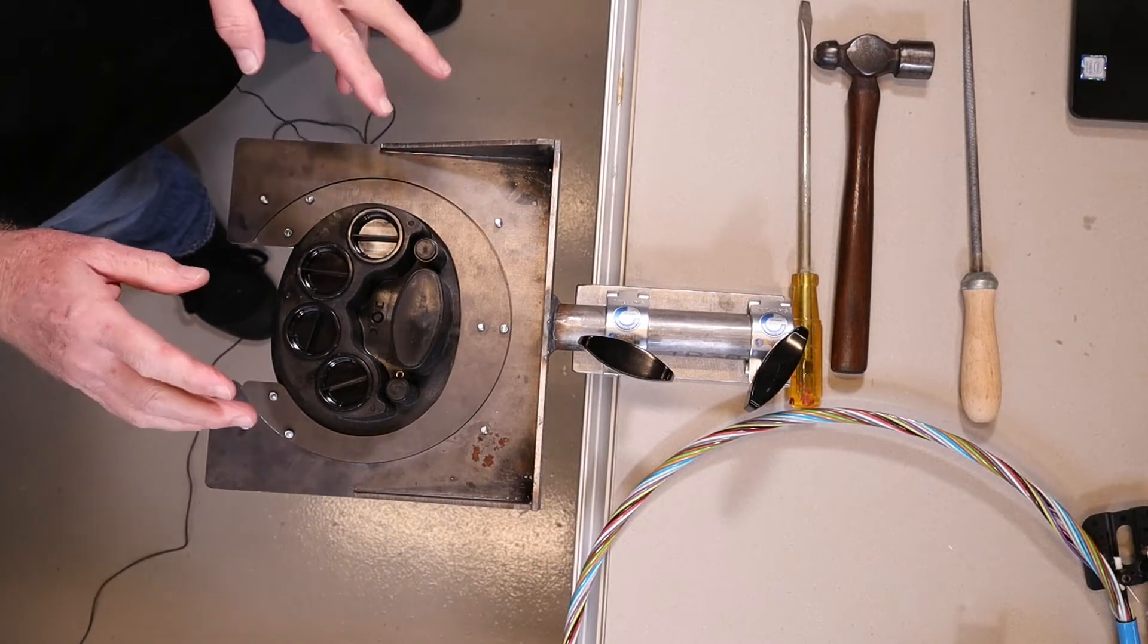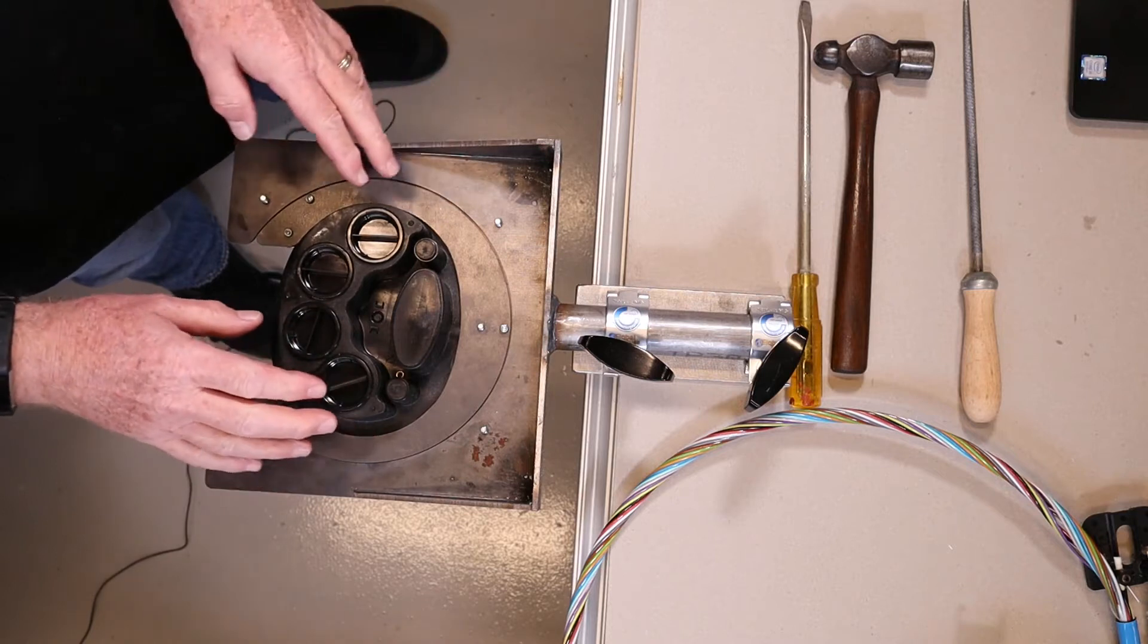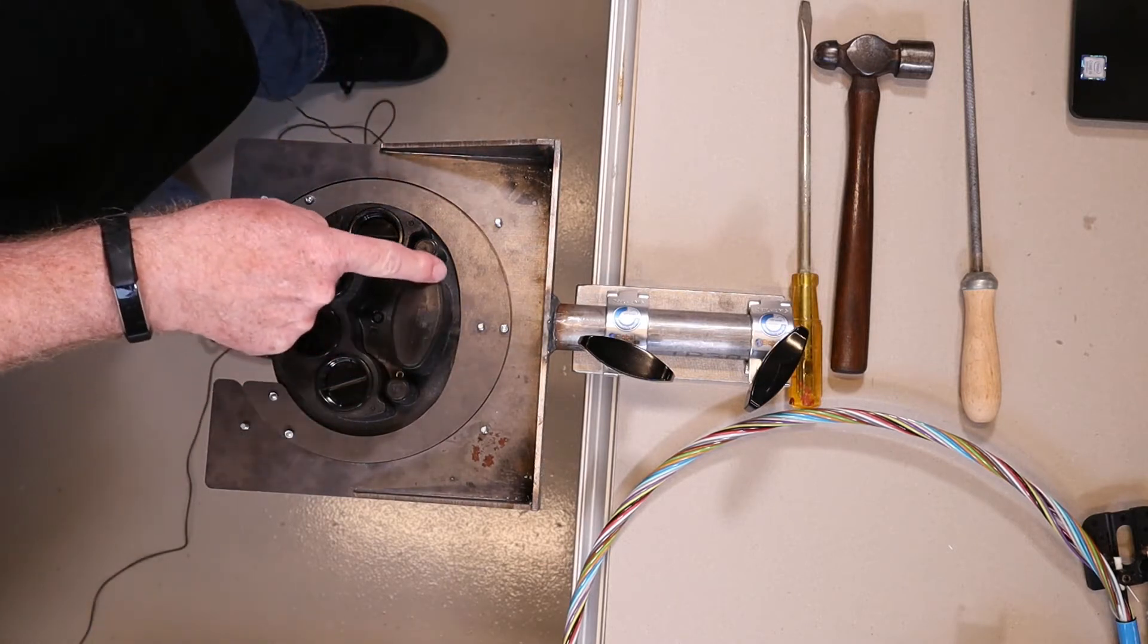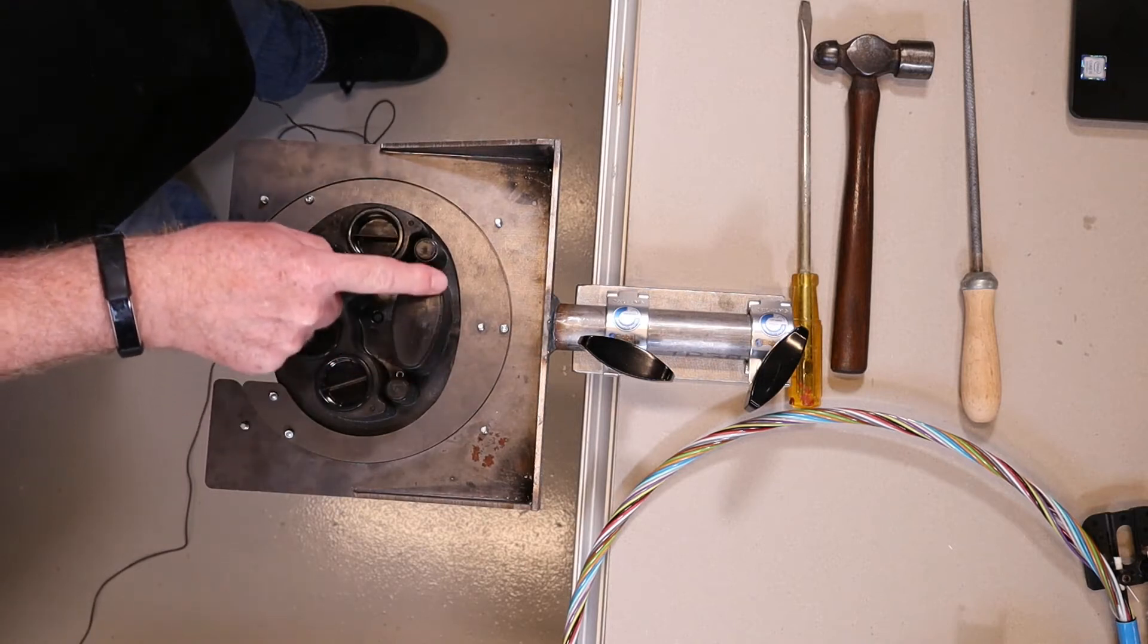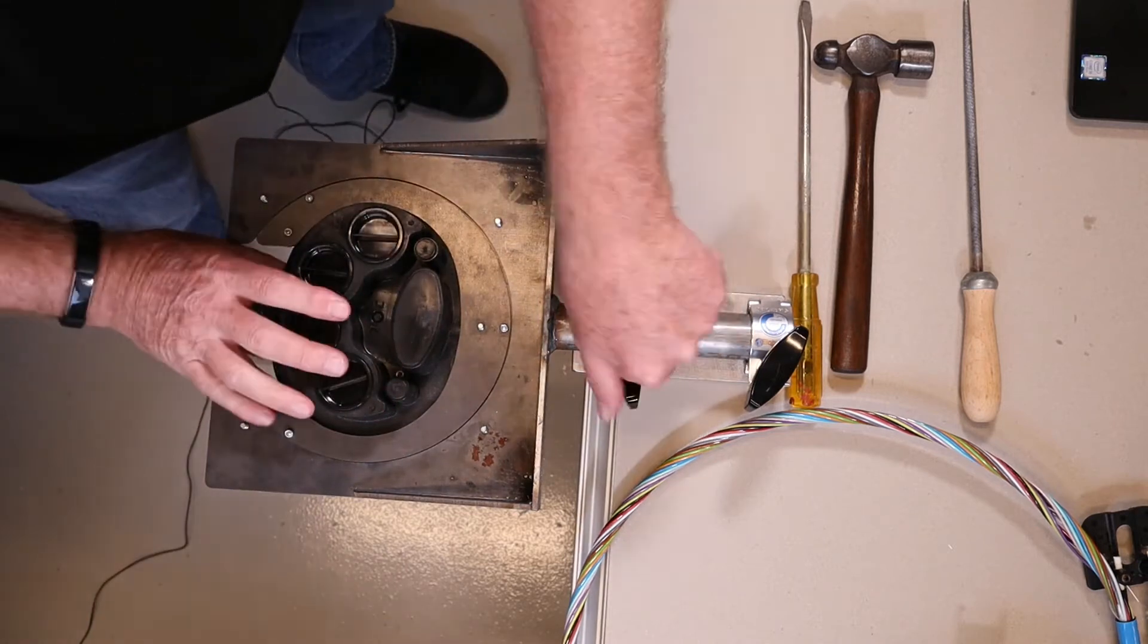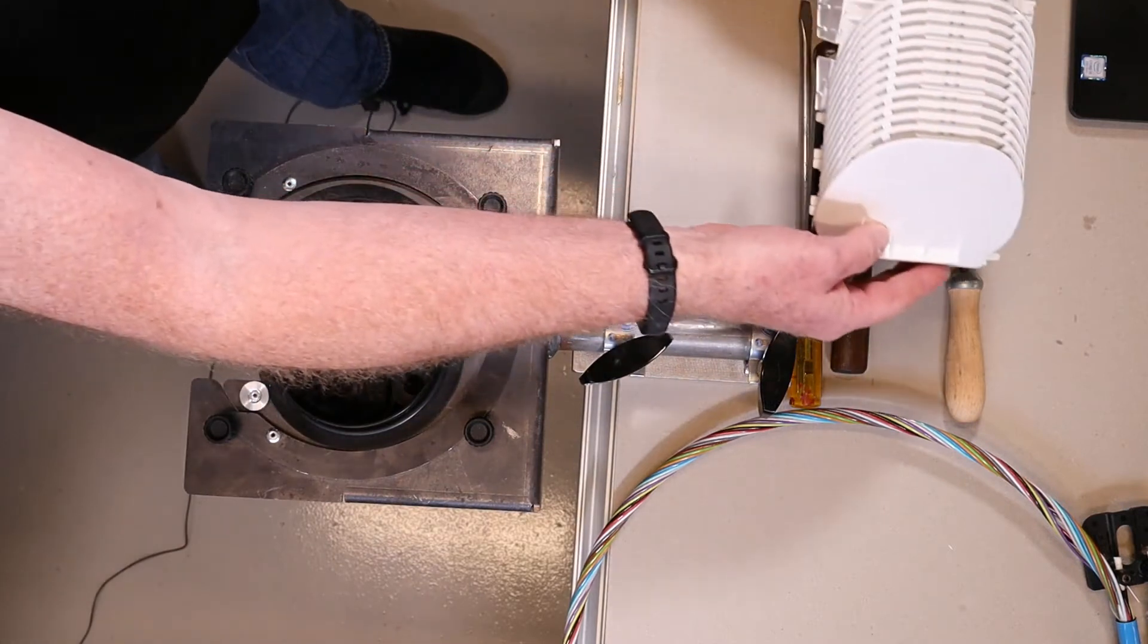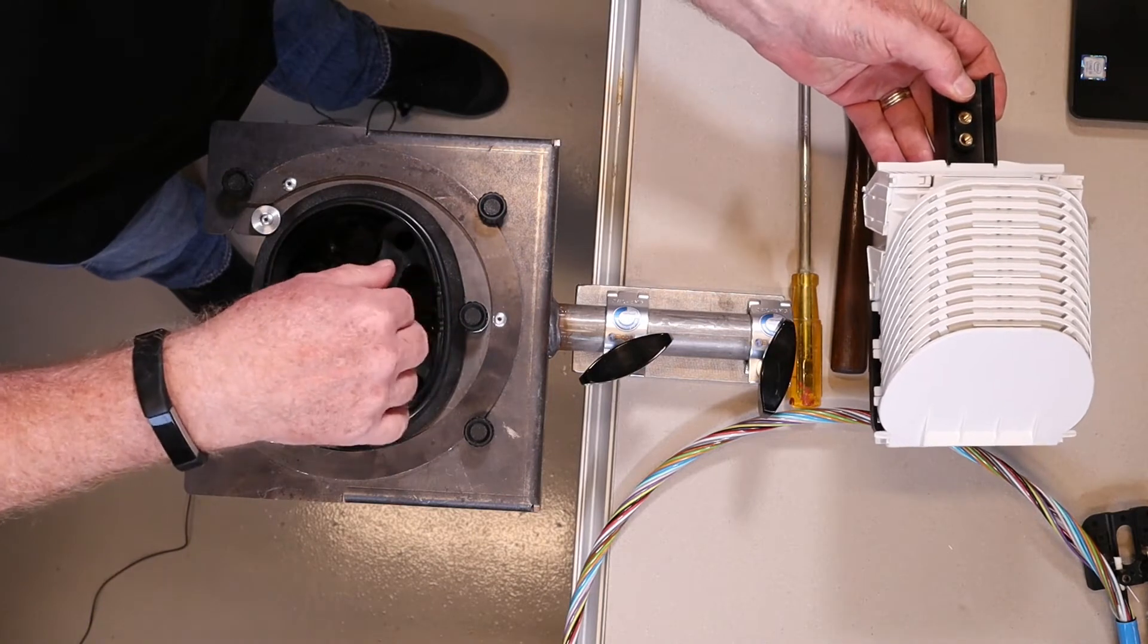Now that we've assembled the gland we need to prepare the base of the closure to accept it. I've put a CMJ or MMJ base into a work stand here. Hopefully you can see this part here is the oval port entry. We've got to knock this out to make room for the gland to go in. I've removed the tray assembly here just to give me room to knock this out and so that you can see what I'm doing.